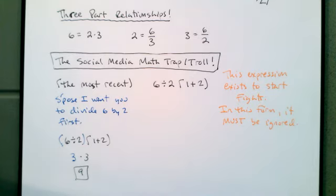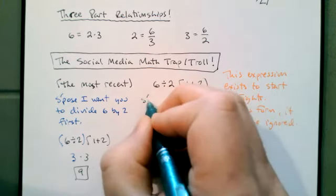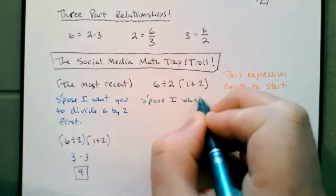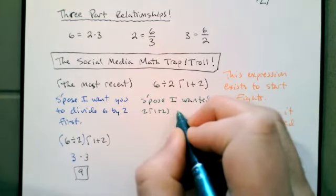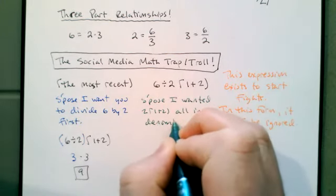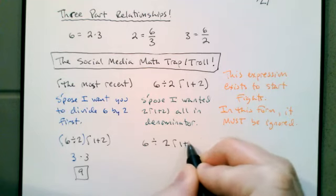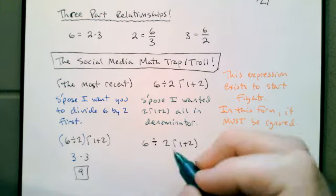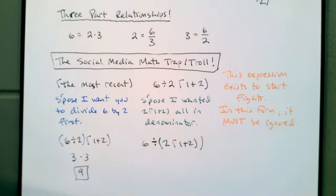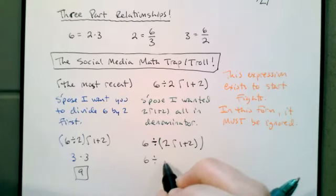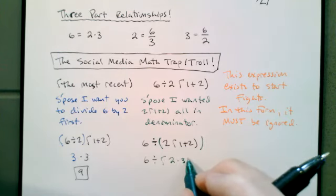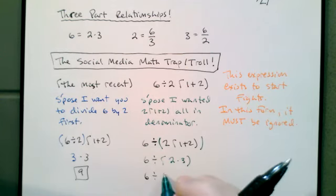But suppose I wanted you to divide 6 by everything that came after it — I want the 2 times 1 plus 2 to be the denominator. Instead of writing 6 divided by 2 times 1 plus 2 and leaving it up to you, I say it's 6 divided by this group — I put parentheses around what I want the denominator to be: 6 divided by (2 times (1 plus 2)). Now there's no ambiguity. 2 times 1 plus 2 is 6, so this is 6 divided by 6, and the answer is 1.